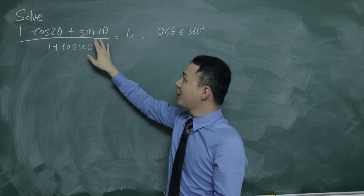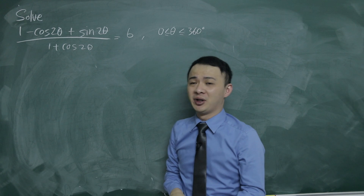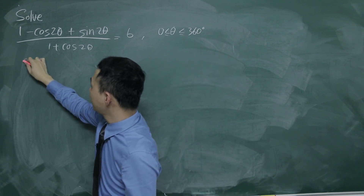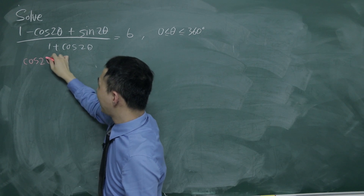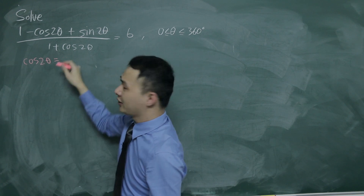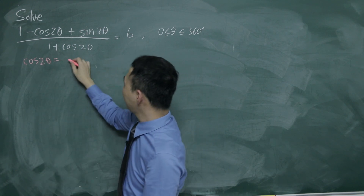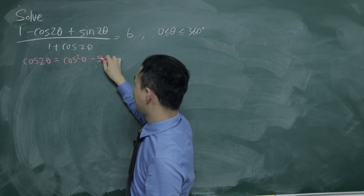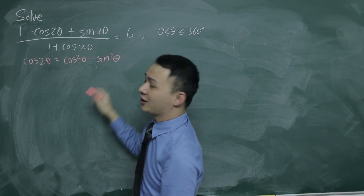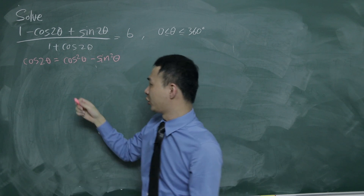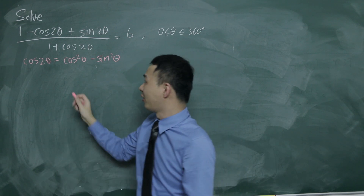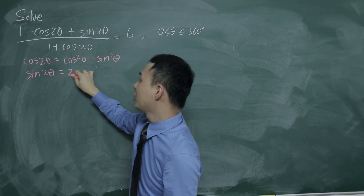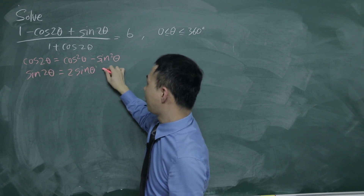So of course with double angles, you should have a double angle formula. I'll write them down first in case we need to use them. For cos 2θ, you have three choices, but here I'll use cos²θ minus sin²θ. You can use another two choices — you just need one or two extra steps. For sin 2θ, you only have one choice, which is straightforward: 2 sin θ cos θ.